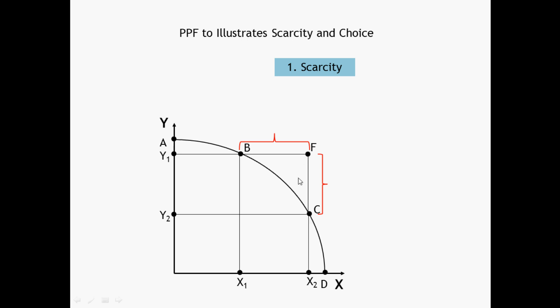This way, all the points like F that lie beyond the production possibility frontier represent the situation of scarcity.